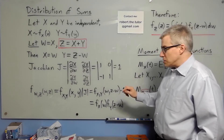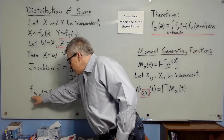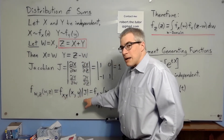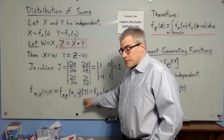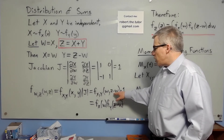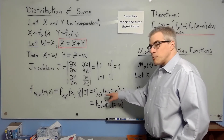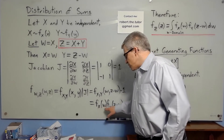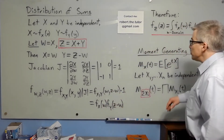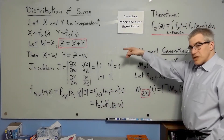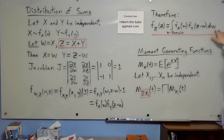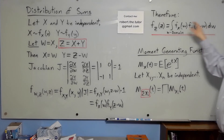Multivariable calculus tells us that if you have the density for w and z, that's going to be the density for x and y multiplied by the absolute value of the Jacobian. That means f of x, y — and we can plug in that x is w and y is z minus w. And x and y are independent, so this breaks up into fx of w times fy of z minus w. Finally, this is the joint distribution. We want the distribution for z, the sum. So we integrate over the entire w domain, and we end up with the marginal distribution, which is exactly what we wanted.